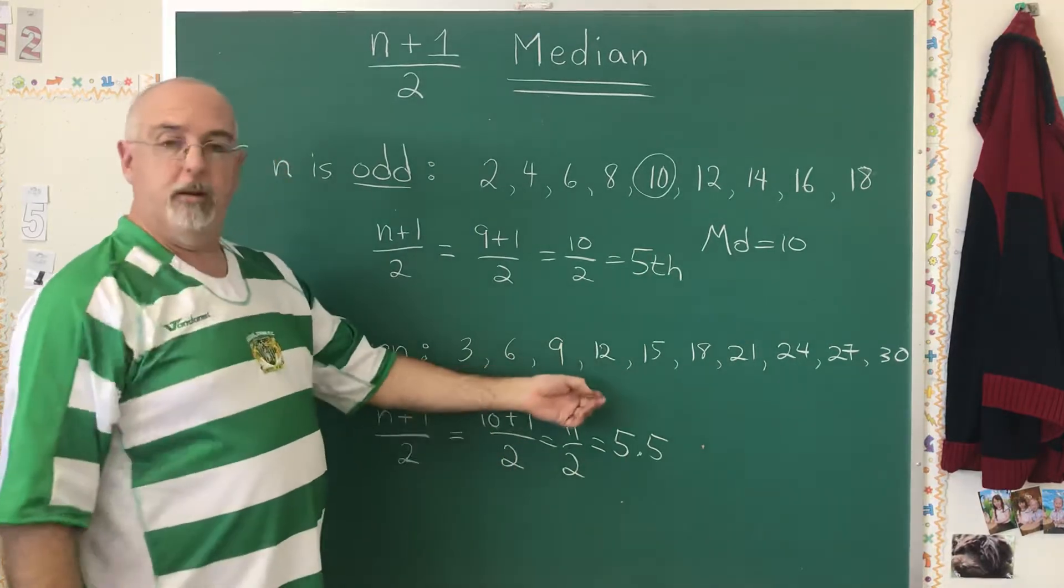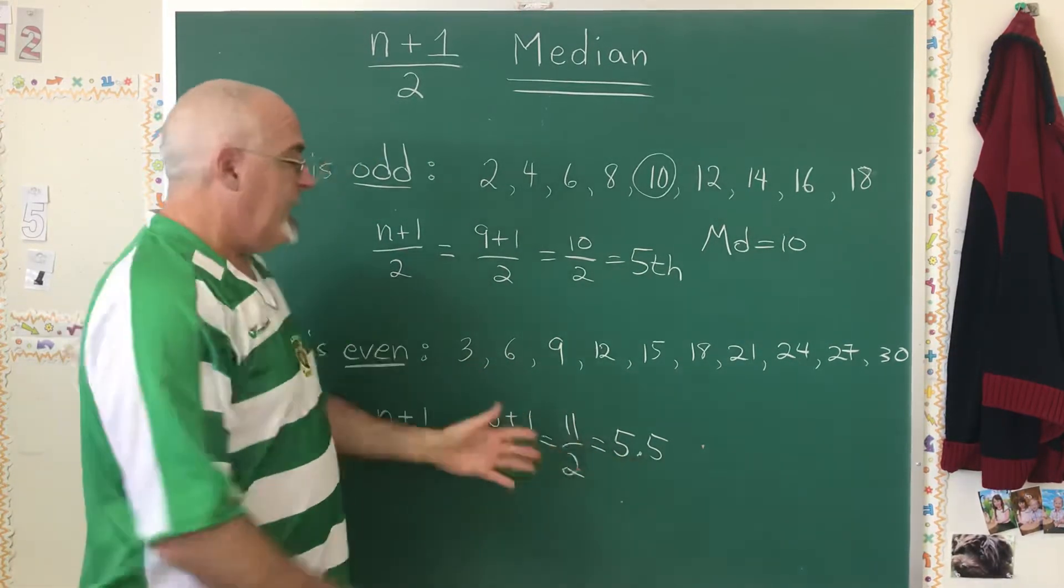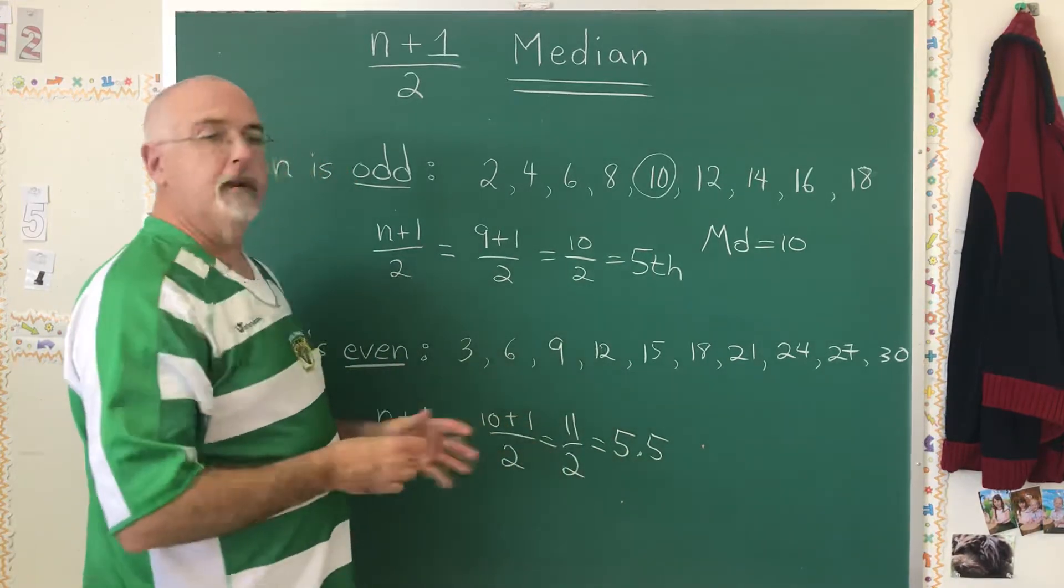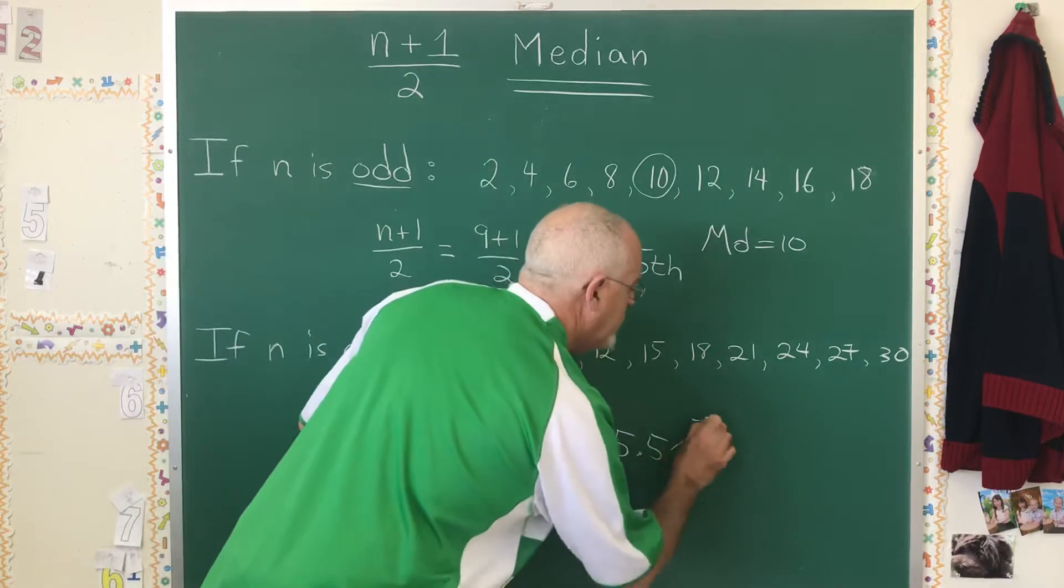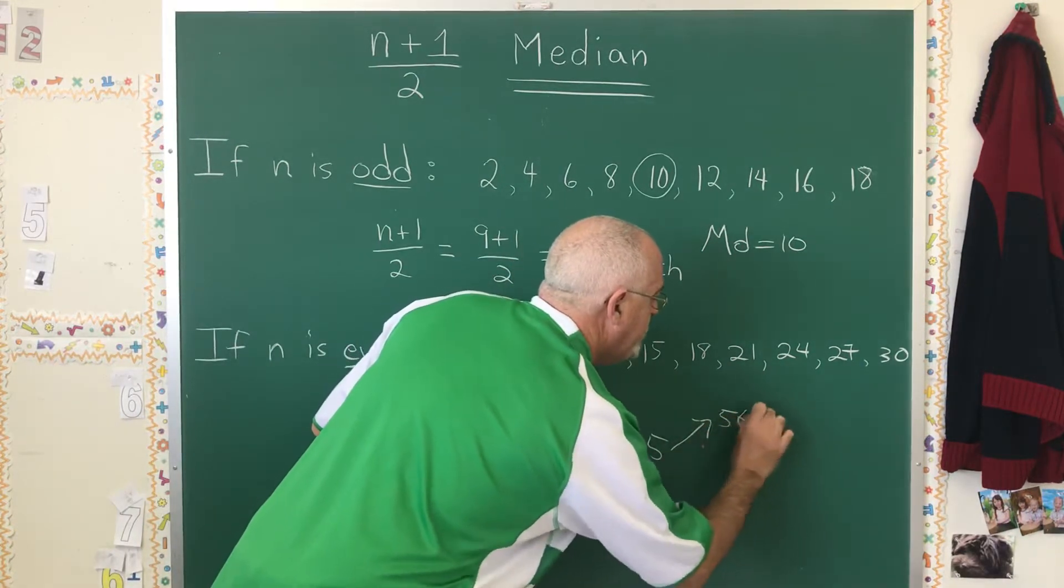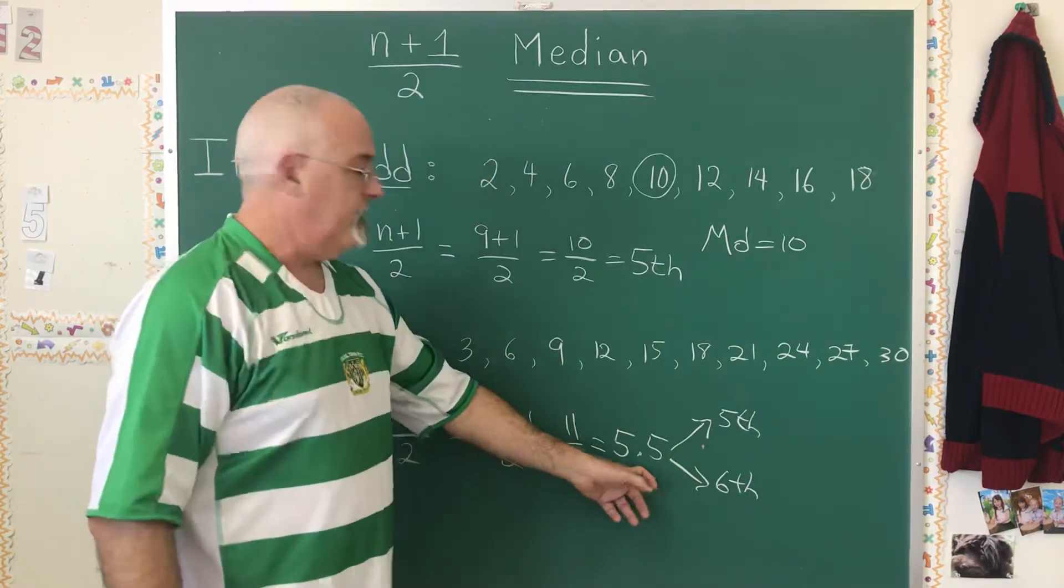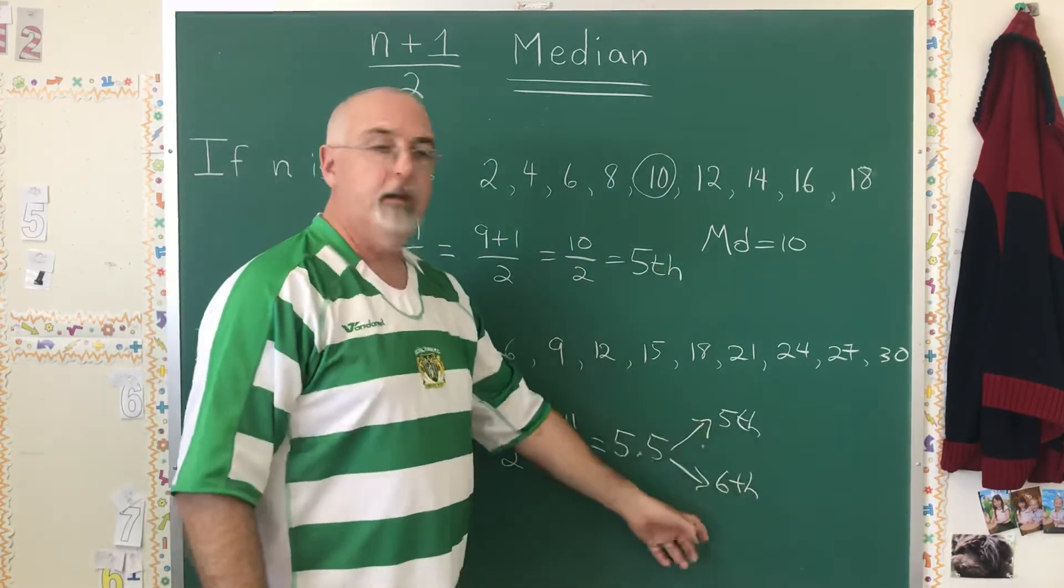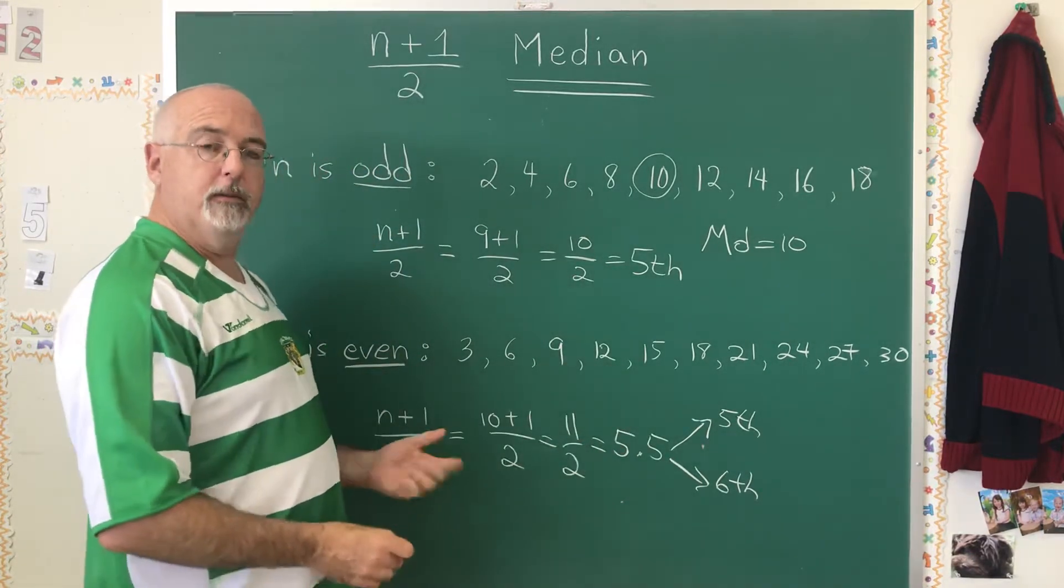Any time you have an even number of data, you will get a 0.5. And this means that our median is the five and a half value. Easier to say it's the average of the fifth and the sixth values, with 5.5 being halfway from fifth to sixth. So we need to find both the fifth and the sixth values to find our median.